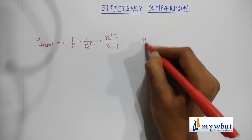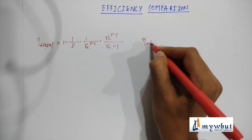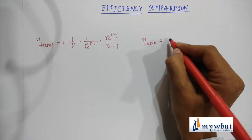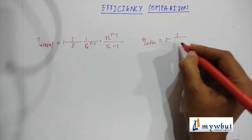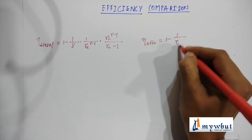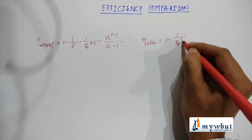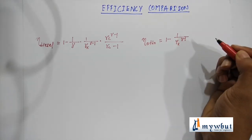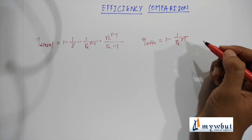The formula for efficiency of the Otto cycle is: η_otto is equal to one minus one by rk to the power gamma minus one.